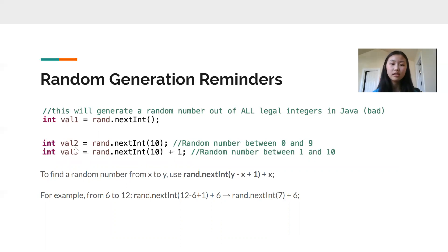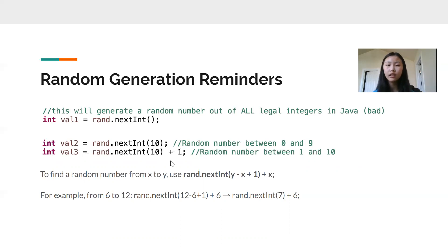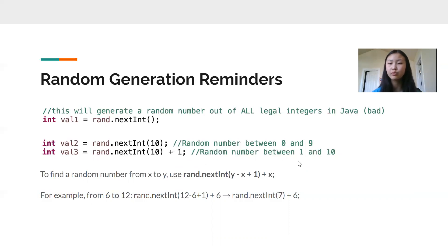Like we saw in the first example, if we have nextInt(10), that number inside is the upper bound plus one, so it prints out a random number between zero and nine — 10 is not included. But if we wanted our lower bound to not start from zero but instead start from a number like one, we would have to add our lower bound, which in this case is one. So now instead of generating from zero to nine, we would generate a random number between one and 10. Since we're adding one, we add one to both limits: zero plus one becomes one, and nine plus one becomes 10.